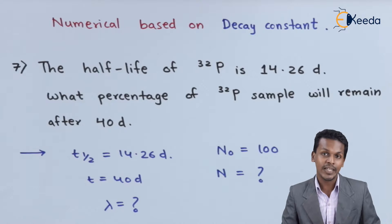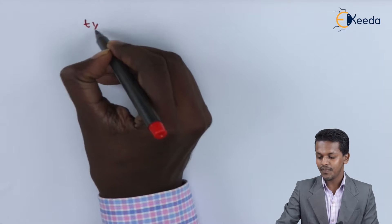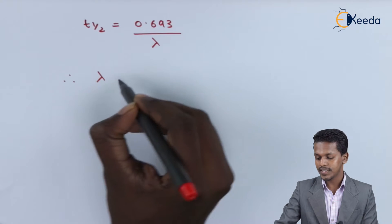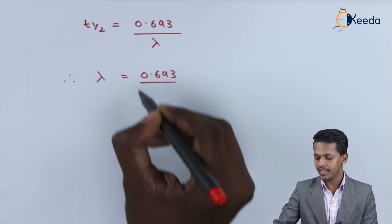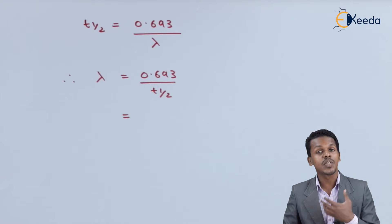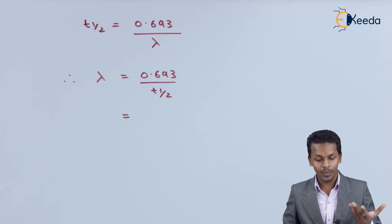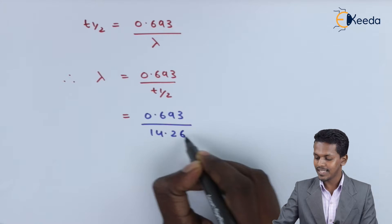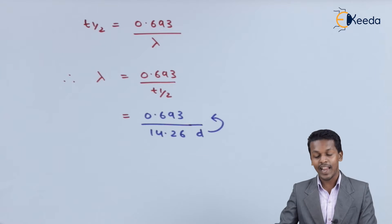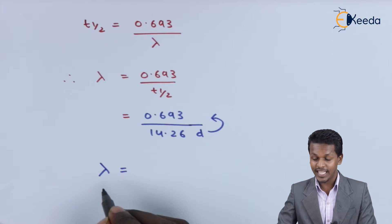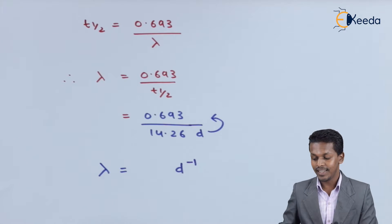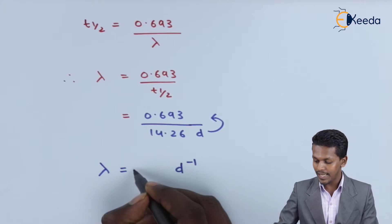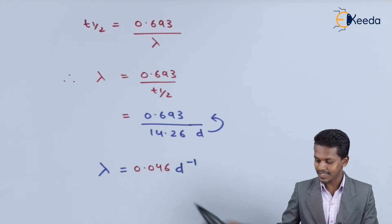The first thing we can do is find the decay constant lambda. The formula is: T-half equals 0.693 divided by lambda. So we rearrange and substitute the value of T-half, which is 14.26 days. Dividing 0.693 by 14.26, the unit of the decay constant will be day-inverse. The value we get is 0.0486 day-inverse.